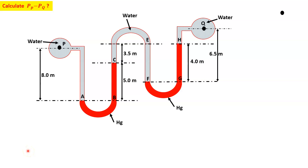Today I will talk about pressure drop calculation using a compound manometer. The compound manometer is connected with two pipelines P and Q, and water is flowing through the pipeline. We have to calculate the pressure difference between P and Q. The pressure at the center of pipeline P is PP.